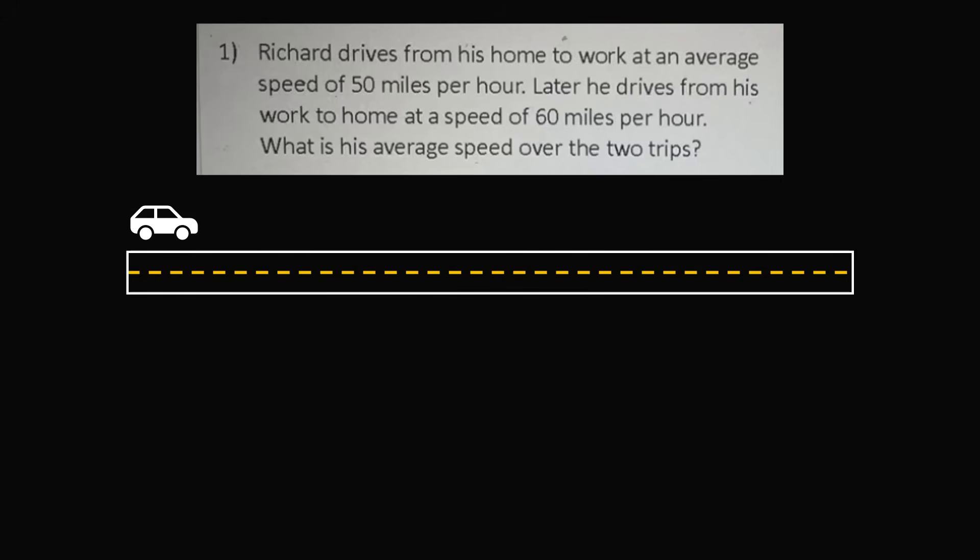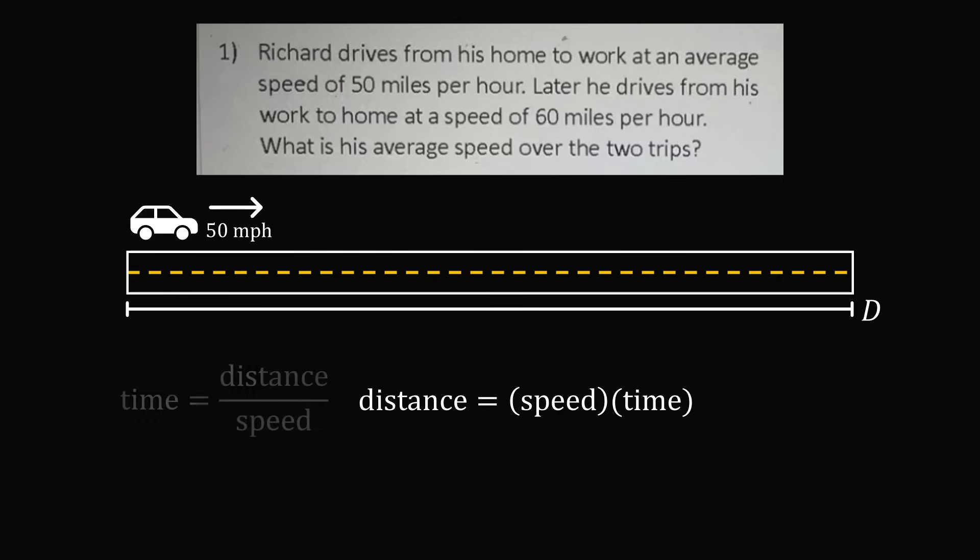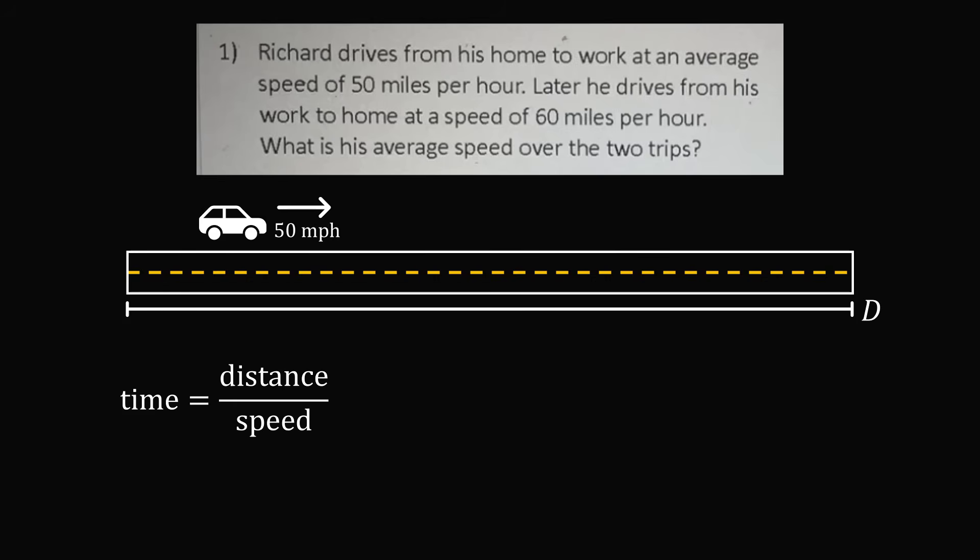Let's set up a diagram where Richard is driving from home to work. Suppose the distance between home and work is equal to a distance d. Richard is driving from his home to work at an average speed of 50 miles per hour. We know that distance is equal to speed times time. Solving for time gives the equation that time is equal to distance over speed. Solving this equation for speed, we get that speed is equal to distance over time.